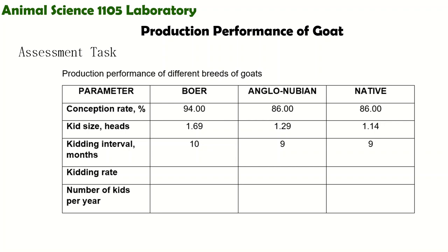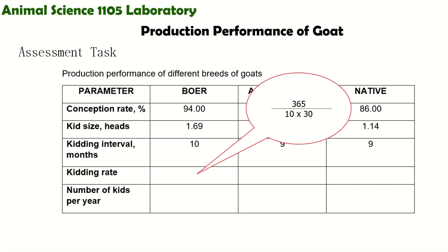The parameters we will compute are kidding rate and number of kids per year. Our given values are conception rate, kid size, and kidding interval. For the kidding rate, the formula is 365 divided by the kidding interval times 30.